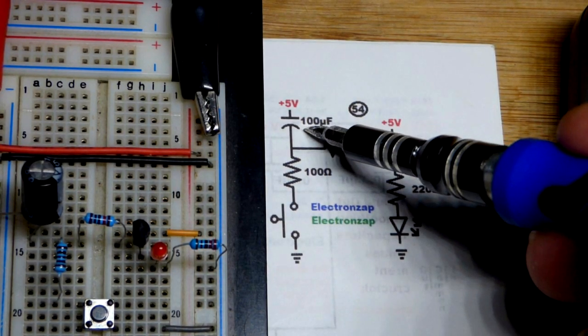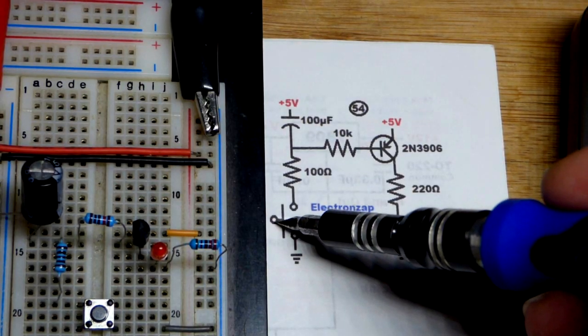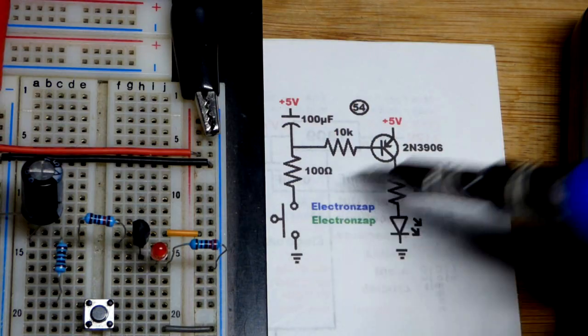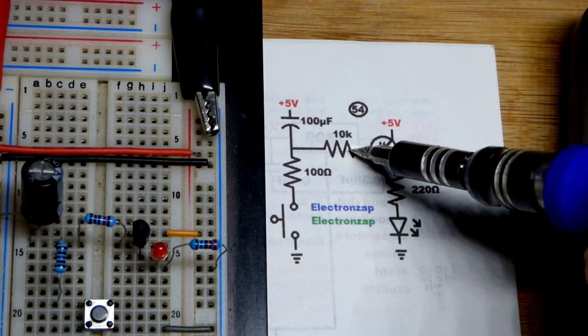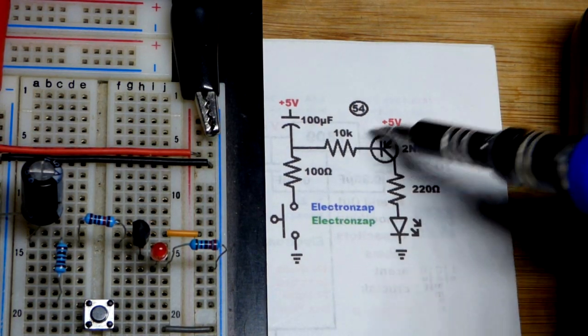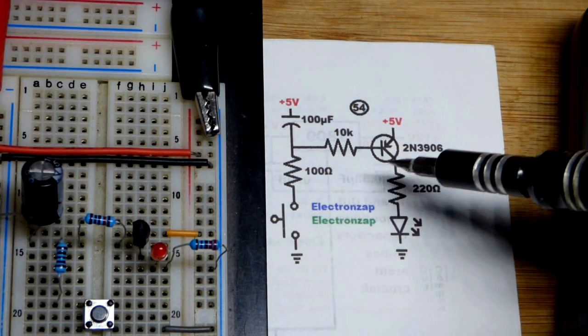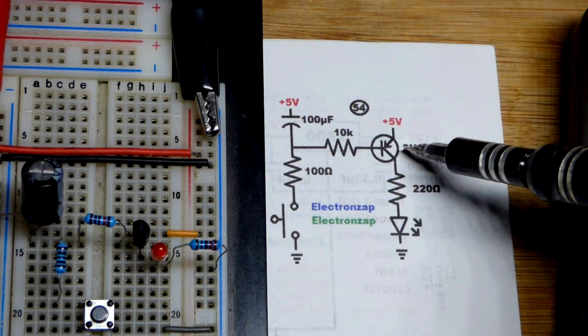So it'll be whatever the voltage of the capacitor is once we release the switch. When we close the switch, we'll have a 5 volt difference, but you lose about 0.6 volts right there. So probably about a 4.4 volt difference, plus we got the resistance in the way that we'll factor into that.